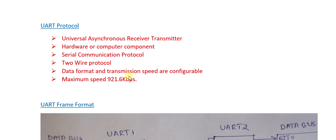The data format and transmission speed in UART are configurable — we can change both the data format and the speed. As far as speed is concerned, the maximum speed observed in UART protocol is 921.6 kbps.